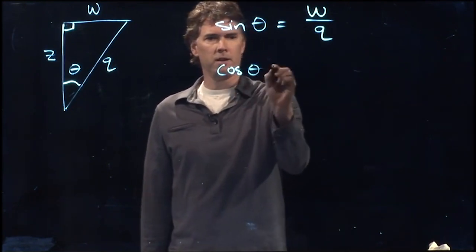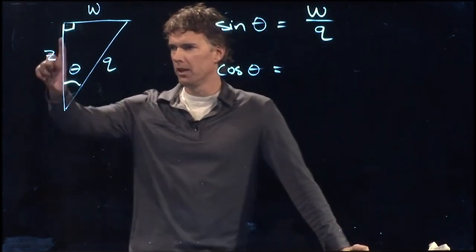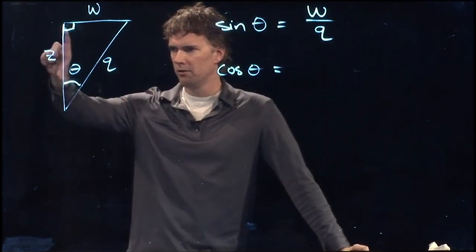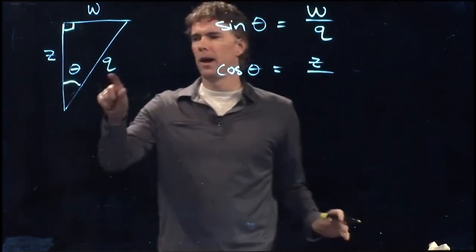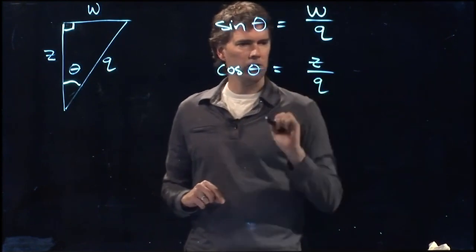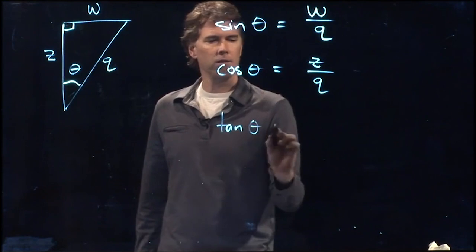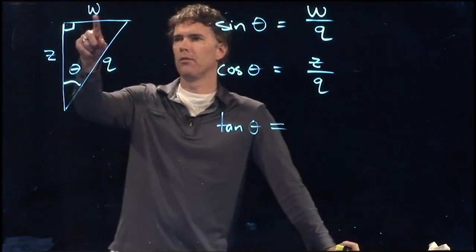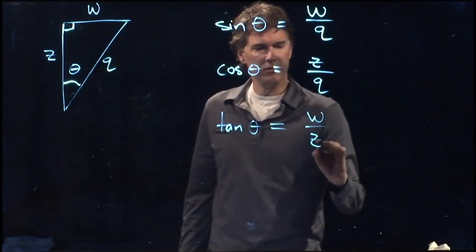Cosine of theta, we said was adjacent over hypotenuse. The adjacent side is right here, so that would be z divided by hypotenuse, which we said was q. And then finally, tangent of theta is going to be opposite w over adjacent z.